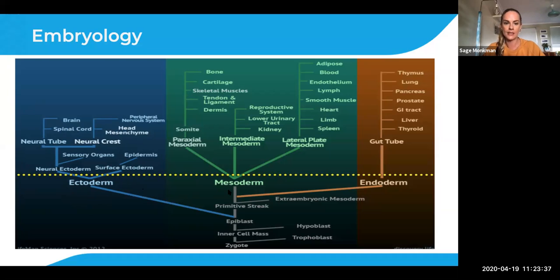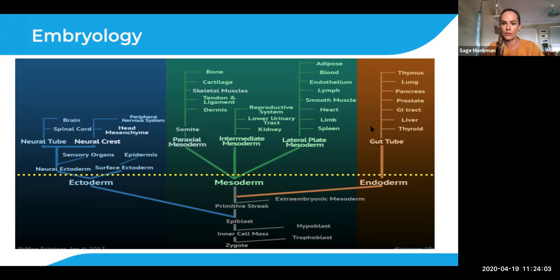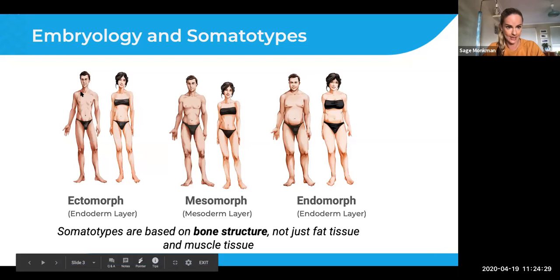Your mesoderm forms your muscles, circulatory system, reproductive system, bone, cartilage, heart, and many organs involved in movement. If more energy was given to the mesoderm layer during crucial development, you'll form more of a mesomorphic body type. The third layer, your endoderm, forms the gut tube and digestive organs — your thymus, lungs, pancreas, prostate, gastrointestinal tract, liver, and thyroid. If more energy was given to the endoderm during crucial development, you'll form more of an endomorphic body type.